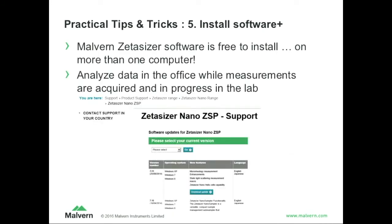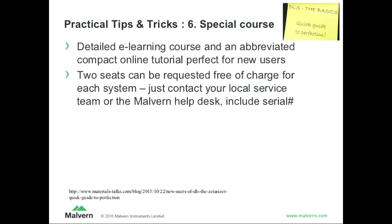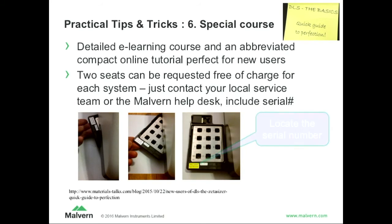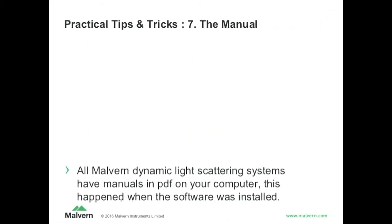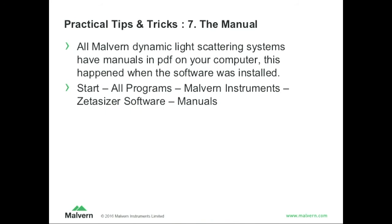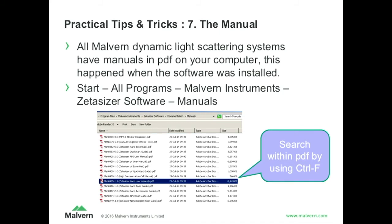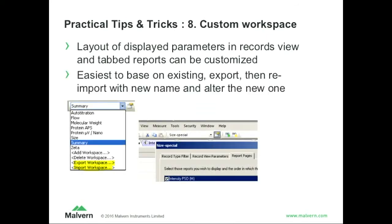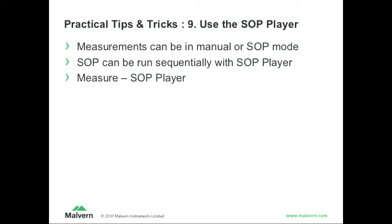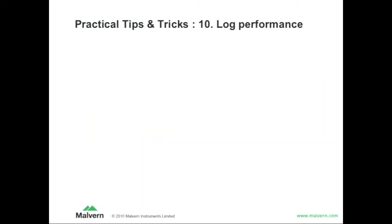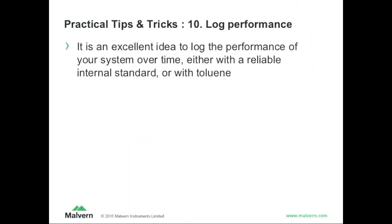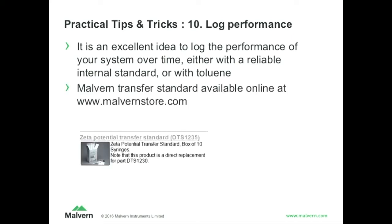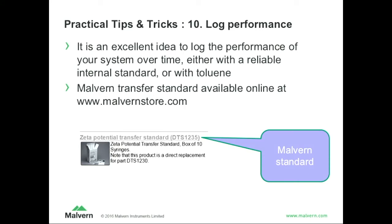You can install the software on as many computers as you like — don't worry about licenses, just download it from our website. We do have some e-learning, and there's a free one-hour tutorial on the blog. If you have new users using the system, tell them about it. There is a manual — surprisingly not many people read the hard copy — but there's a PDF version, and what I like about PDF is that you can press Ctrl+F and search for what you're trying to find. You can customize the software to put workspaces in there to make your own liposome or nano-assembler workspace. You can use SOP players to concatenate different SOPs so you can make more complicated setups, maybe combining zeta potential and size measurements. And one thing not many people do but is a nice thing: keep a log of what your system is doing as a function of time — as a little standard. You can also use your own internal reference and keep track of what your system is doing.